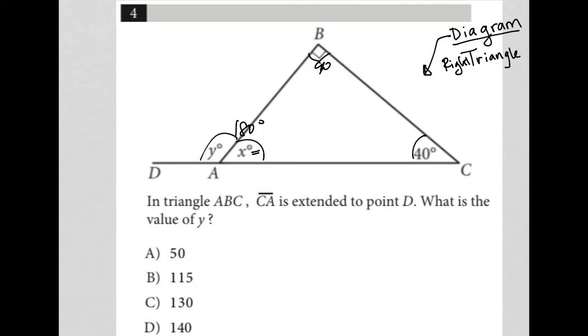That means x has to be 50 degrees because the three angles of a triangle add up to 180. And if x is 50 and x plus y is 180, that makes y equal to 130.